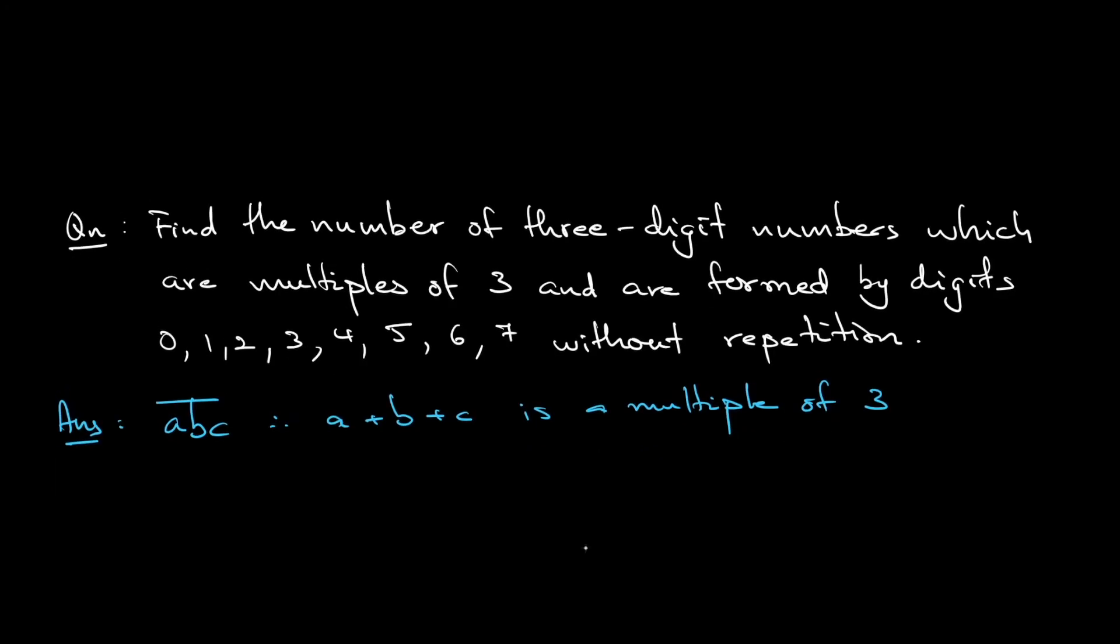First thing first, these numbers 0, 1, 2, 3, 4, 5, 6, 7 - if I divide them by 3 the possible remainders are 0, 1, 2, 0, 1, 2, 0, 1 respectively.